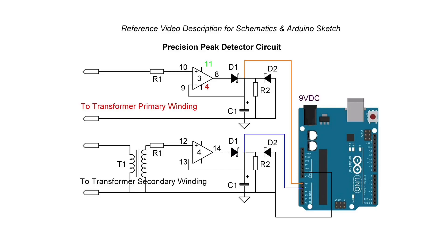Diode 2 is reverse biased — a Zener — and that's to protect the Arduino from exceeding 5 volts DC on the analog ports, should that occur for any reason.